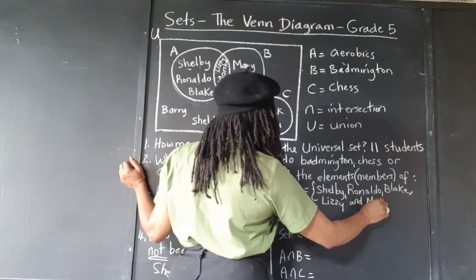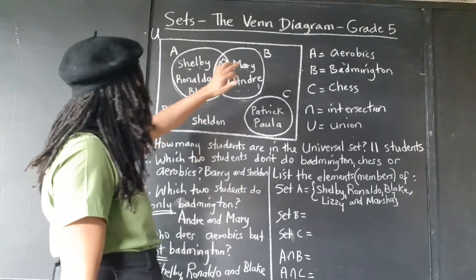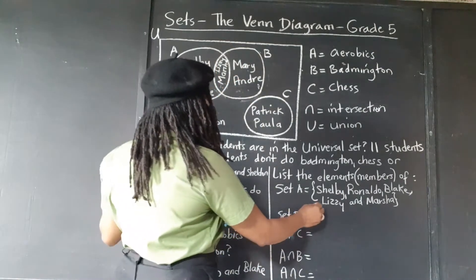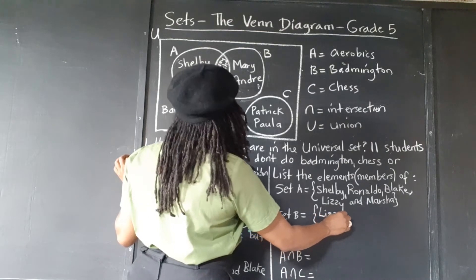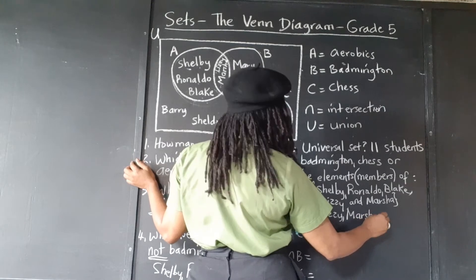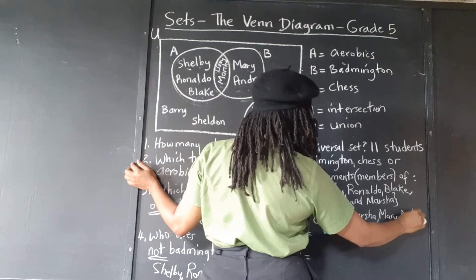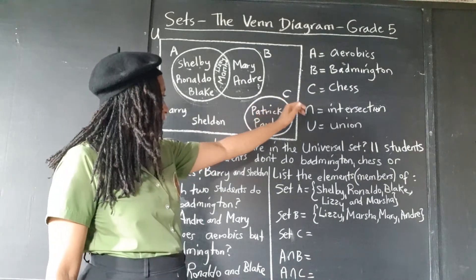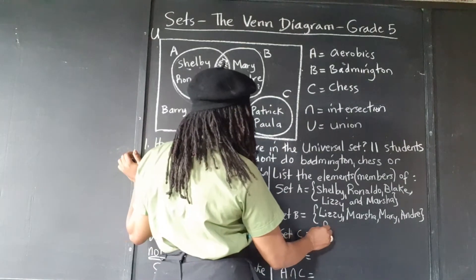These are the students in set B — the B circle. Students in set B would be Lizzie, Marsha, Mary, and Andre. And for set C, we have Patrick and Paula.